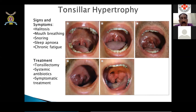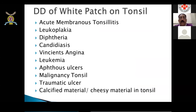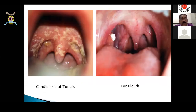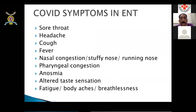Tonsillar hypertrophy requiring tonsillectomy should be discussed with the patient. Unilateral tonsillar hypertrophy in an elderly patient with history of smoking and alcohol raises concern for cancer; it could also be lymphoma. White patches on the tonsil can indicate acute membranous tonsillitis, leukoplakia, diphtheria, candida, Vincent's angina, leukemia, malignancy, traumatic ulcer, or calcified tonsilloliths. Tonsillar malignancy and diphtheria must be kept in mind. Candidiasis of the tonsil and oropharynx presents as white patches that bleed on touch.